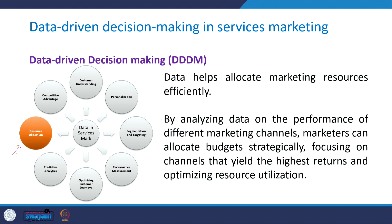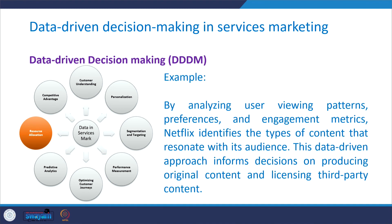Next comes resource allocation. Data helps allocate marketing resources efficiently. By analyzing data on the performance of different marketing channels, marketers can allocate budget strategically, focusing on channels that yield the highest return and optimizing resource utilization. For example, by analyzing user viewing patterns, preferences, and engagement metrics, Netflix identifies the types of content that resonate with its audience. This data-driven approach informs decisions on producing original content and licensing third-party content as well.